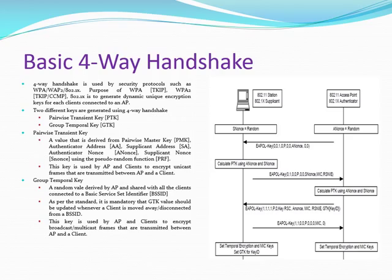PTK is used to encrypt unicast traffic only. GTK is uniquely generated by the AP and shared across all clients connected to that BSSID. GTK is renewed when a client disassociates and is used to encrypt multicast and broadcast traffic.